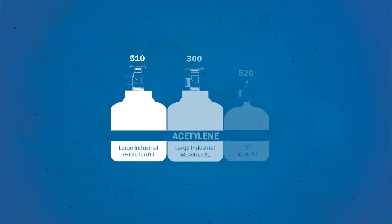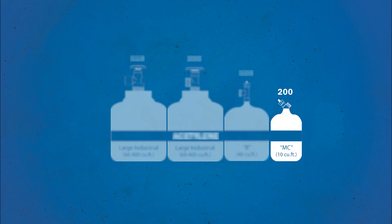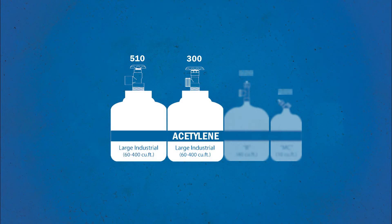Acetylene regulators are available with four different CGA inlet connection types: CGA 200 for connecting to a 10 cubic foot MC acetylene cylinder, CGA 520 for connecting to a 40 cubic foot B acetylene cylinder, and CGA 300 and 510 for connecting to larger acetylene cylinders.